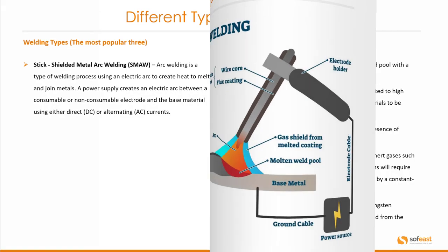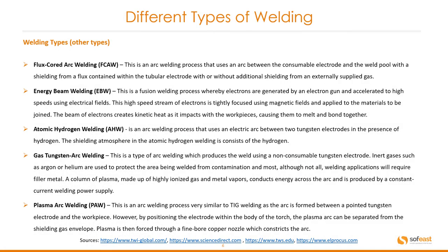Let's move into some of the other different types of weld. I'm not going to go through these in detail but I'll just go through the headlines — you can pause this video and read more at your leisure. So we have flux core arc welding, energy beam welding, atomic hydrogen welding, gas tungsten arc welding, and plasma arc welding.